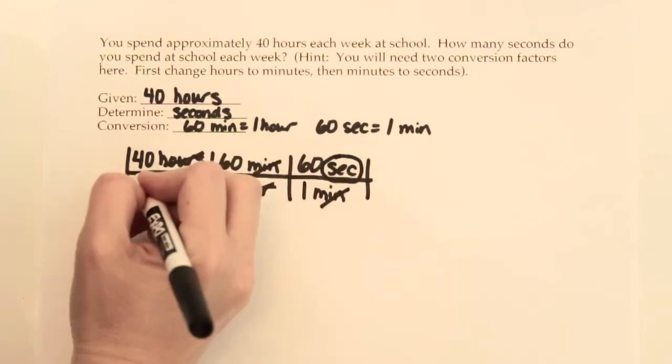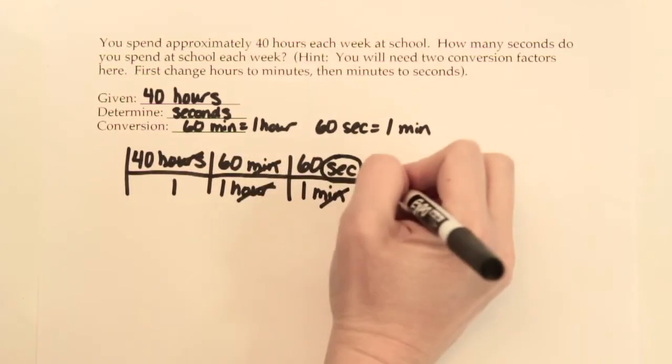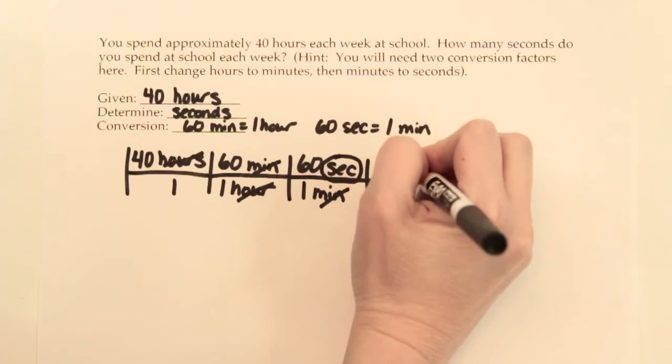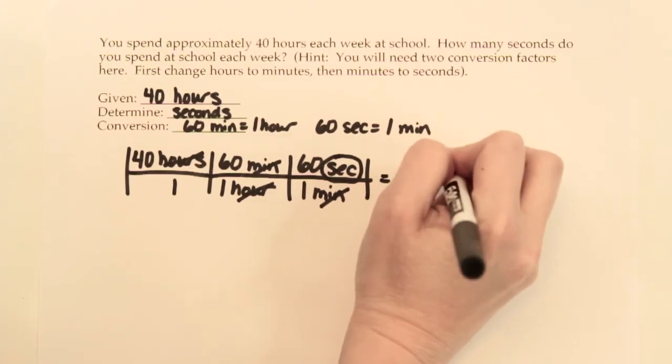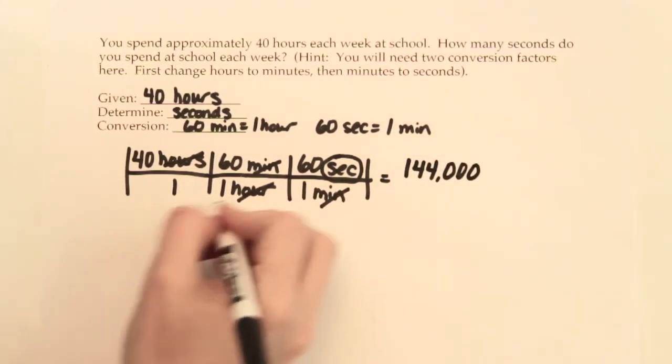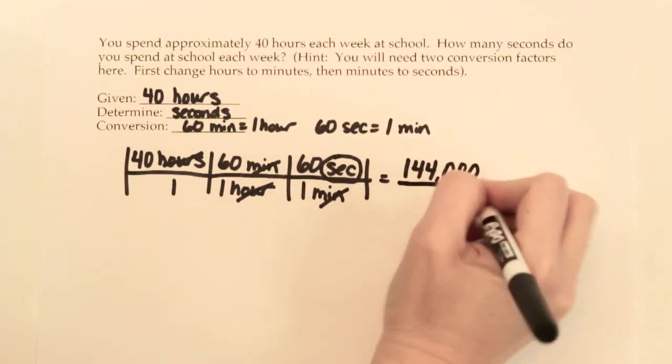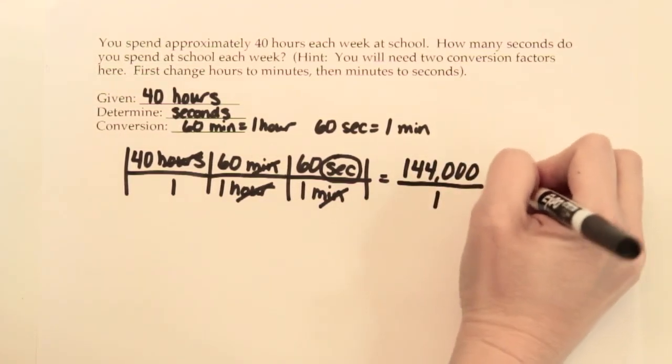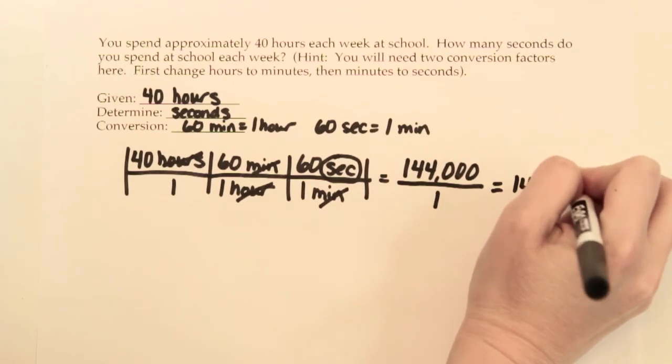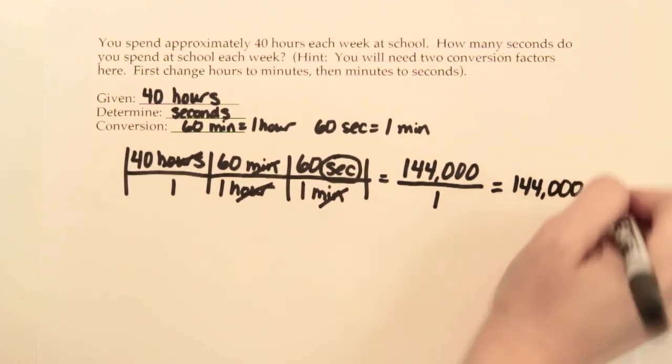Now we just multiply. 40 times 60 times 60 is 144,000. 1 times 1 times 1 on the bottom. So you spend approximately 144,000 seconds each week at school.